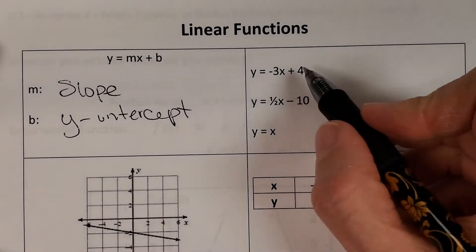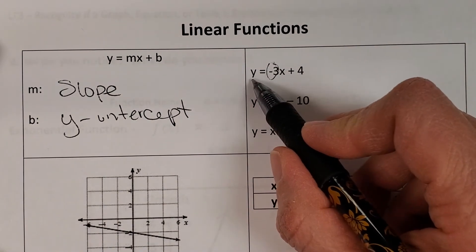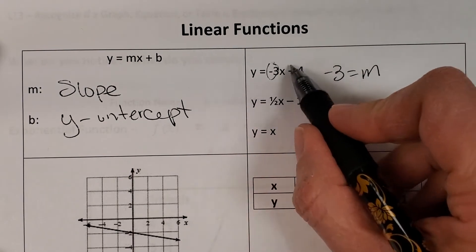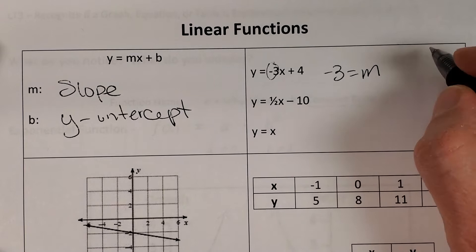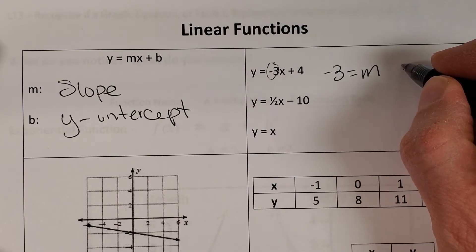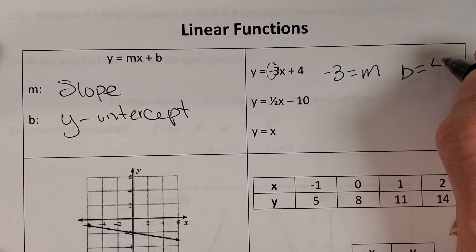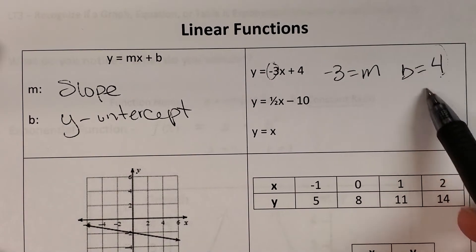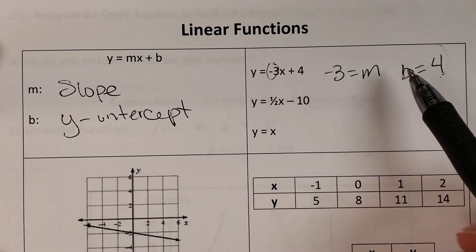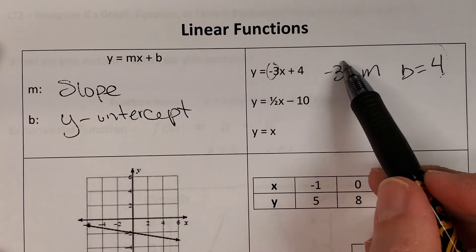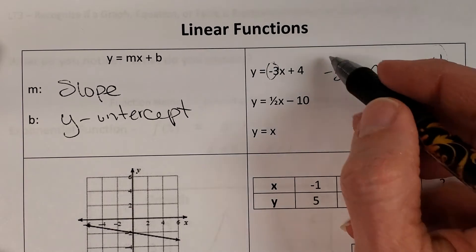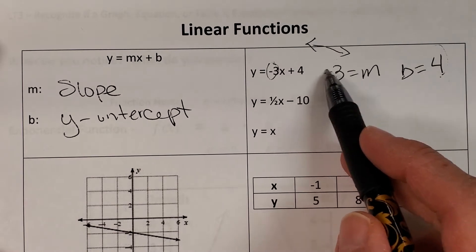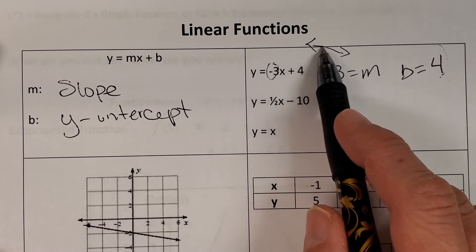So just real quick: we have negative three. When y is alone, the number in front of x is our slope, and the number added or subtracted without being multiplied by x is our y-intercept — we use the letter b for that. So if we were going to graph that, we'd start at four on the y-axis, and our slope would be negative three, which means it's going down from left to right.